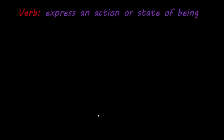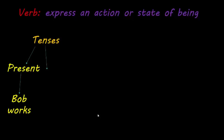Next, we're going to discuss the verb. A verb expresses an action or state of being. There are three different tenses. Present tense is talking about the here and now — for example, 'Bob works.' If I'm talking about something that happened last week, I'm in past tense: 'My niece opened presents at her birthday last week' — opened is past tense. Or simply, 'Bob worked last week.'